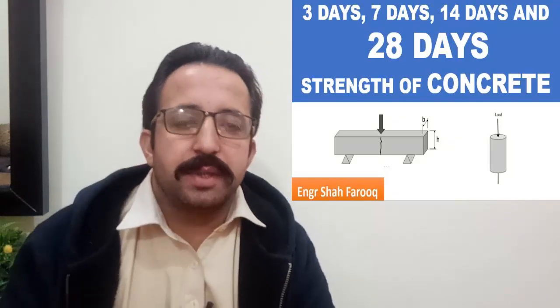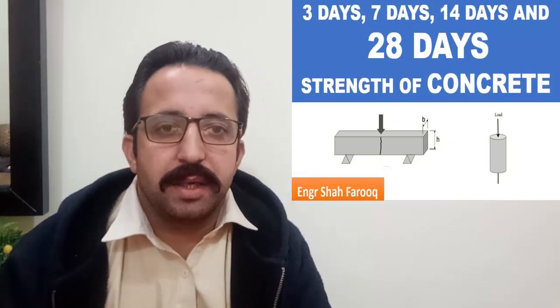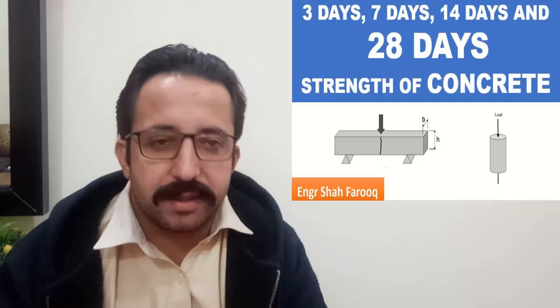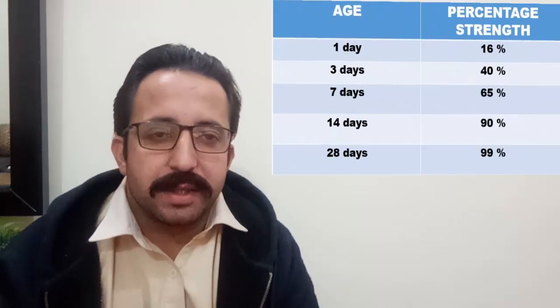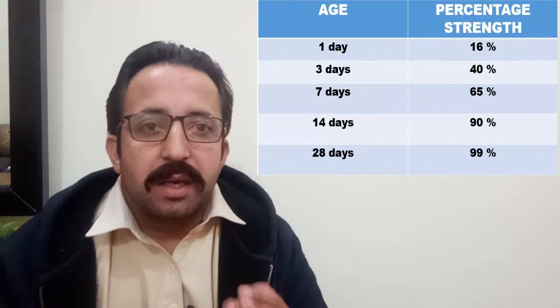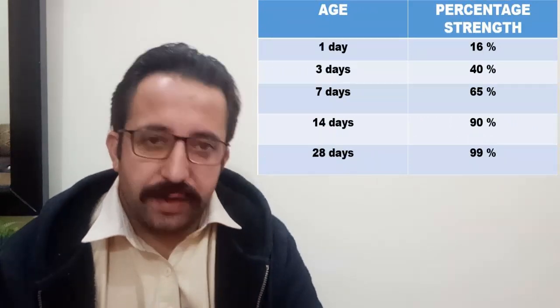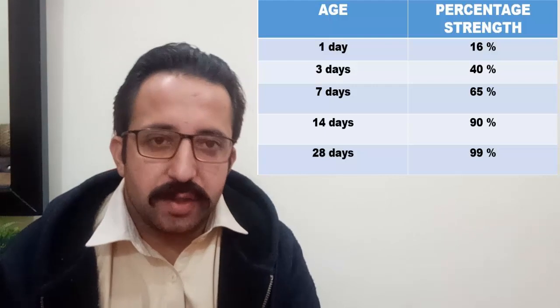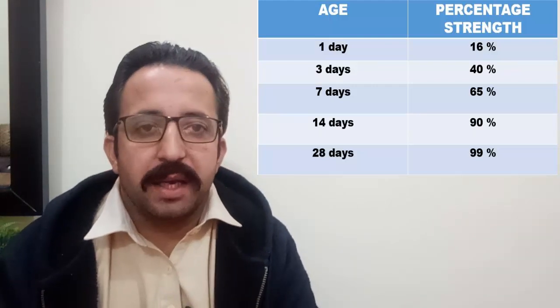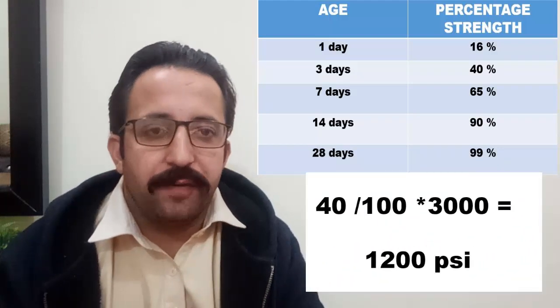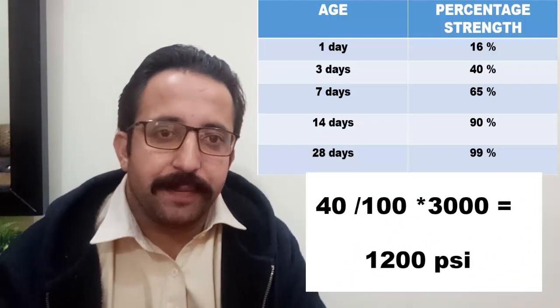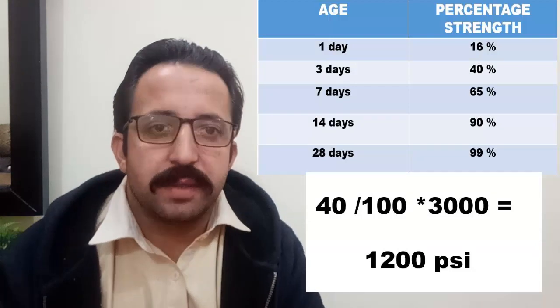In this video we are going to discuss the strength of concrete at different stages compared with 28-day strength. After one day, concrete gains almost 16 percent of its total strength. After three days it gains 40 percent of the total strength. For example, if the compressive strength at 28 days is 3000 psi, then after three days it will gain 40 percent of 3000 psi, which is equal to 1200 psi.